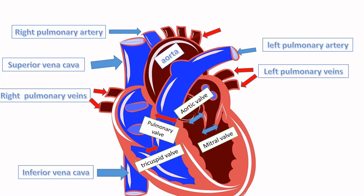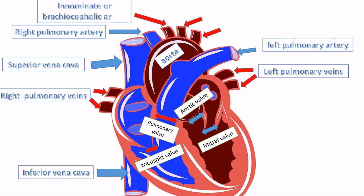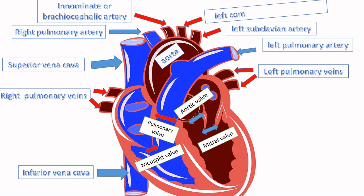Up there we see three branches of the aorta: the first one is the brachiocephalic artery, another is the left subclavian artery, and another is the left common carotid artery. The two branches of the pulmonary arteries originate from the pulmonary trunk.